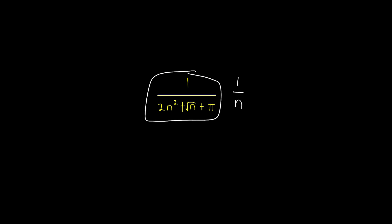As a result, the terms of the yellow sequence, since they're just 1 being divided by a greater number, these terms are all less than or equal to 1 over n.